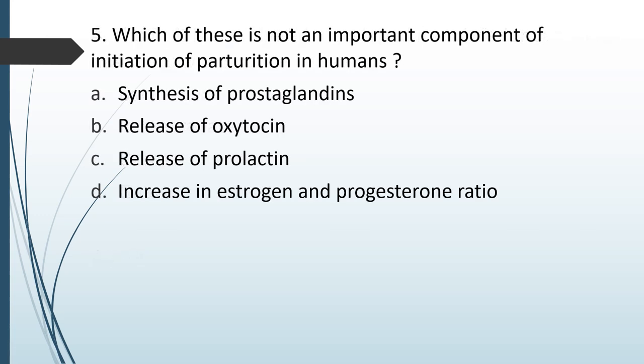Which of these is not an important component of initiation of parturition in humans? (A) Synthesis of prostaglandins; (B) release of oxytocin; (C) release of prolactin; (D) increase in estrogen and progesterone ratio. The correct answer is option C — release of prolactin.